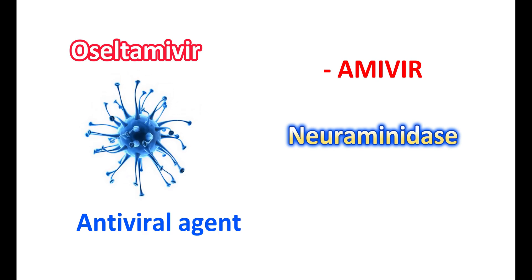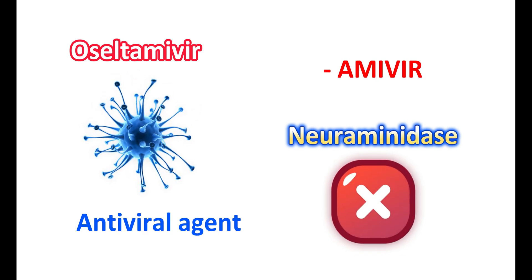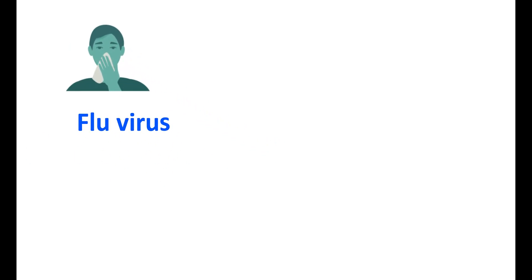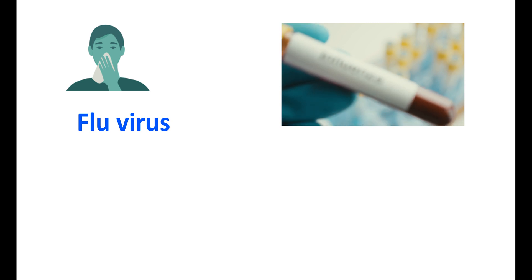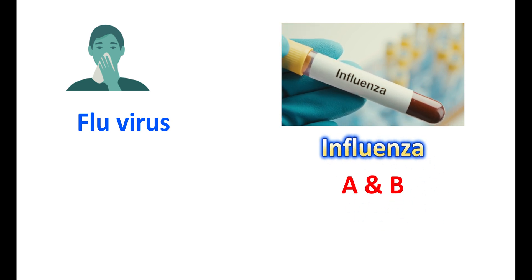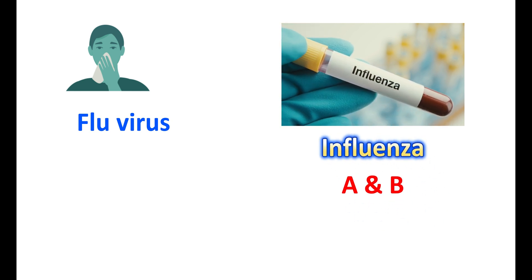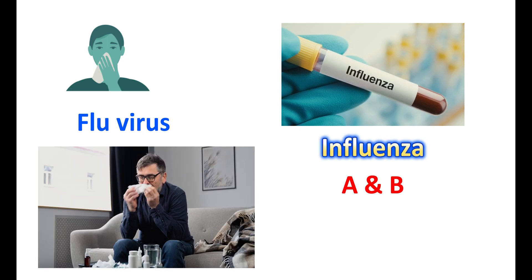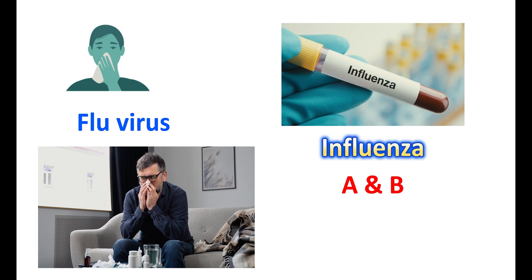Oseltamivir can block this enzyme, thereby producing antiviral activity. This medication can be used for the treatment of flu virus infection, and it can be used for both influenza type A as well as type B infections. Most people are infected with influenza A virus, which results in symptoms like cold, sore throat, chills, and body pains.